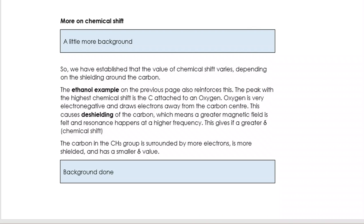A little bit on chemical shift. The value of chemical shift does depend on the shielding around the carbon. For ethanol, the peak with the highest chemical shift is attached to an oxygen. Oxygen is very electronegative, that will draw electrons away from the carbon center, which makes it more deshielded. If you've got a carbon bonded to something more electronegative, the peak will be further to the left.